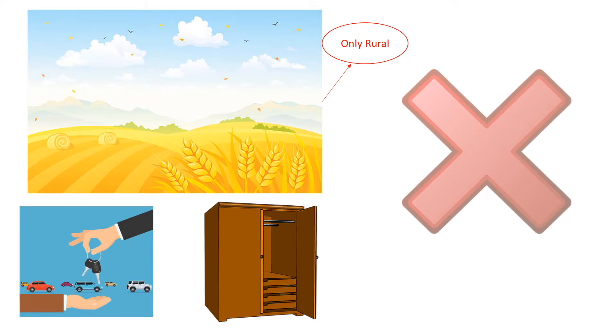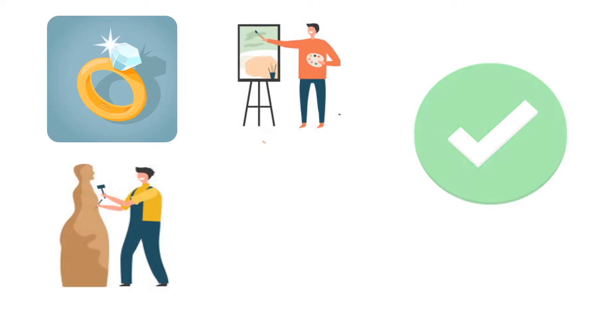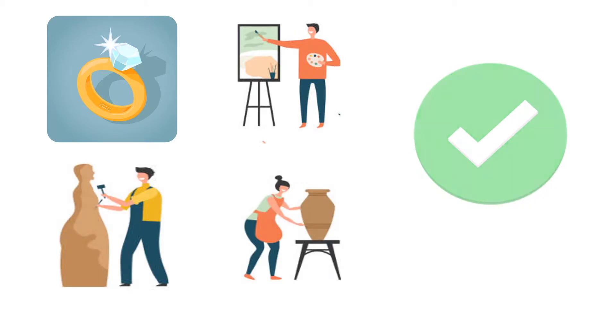Now that we have covered the exclusions, let's cover some inclusions as well. First, and very important — jewellery. Yes, this might surprise you, but jewellery, including gold utensils, are capital assets for calculating capital gains. Other things that are included: drawings, paintings, sculptures, archaeological collections, or any other work of art.